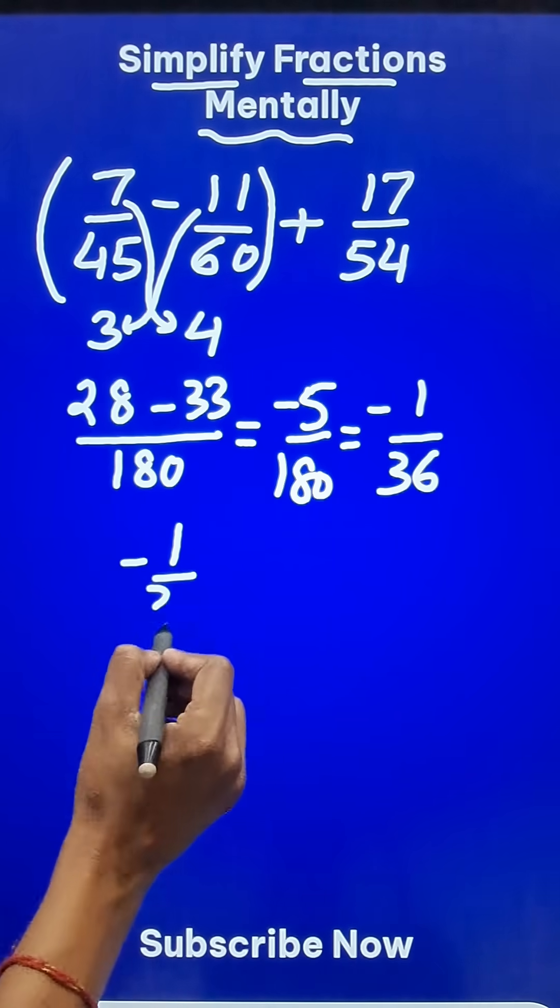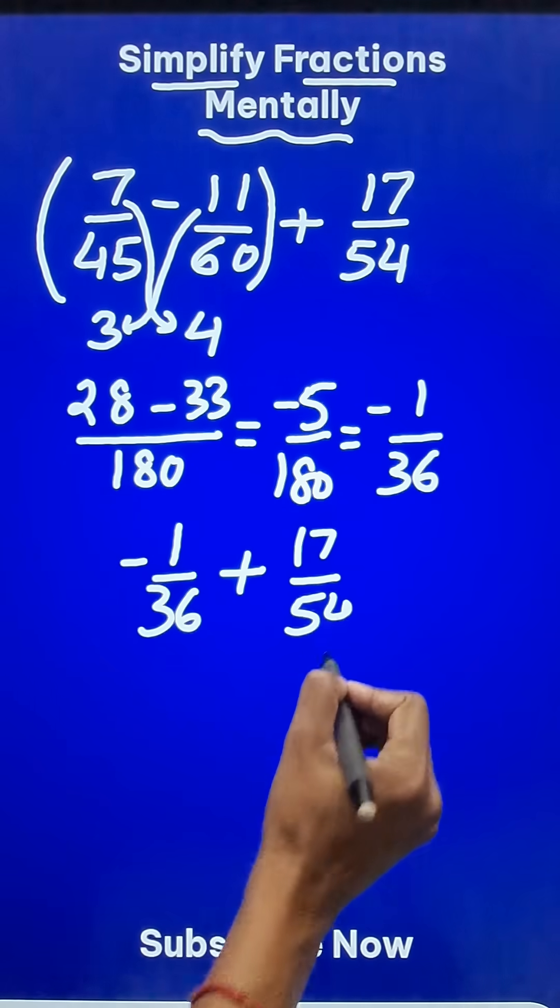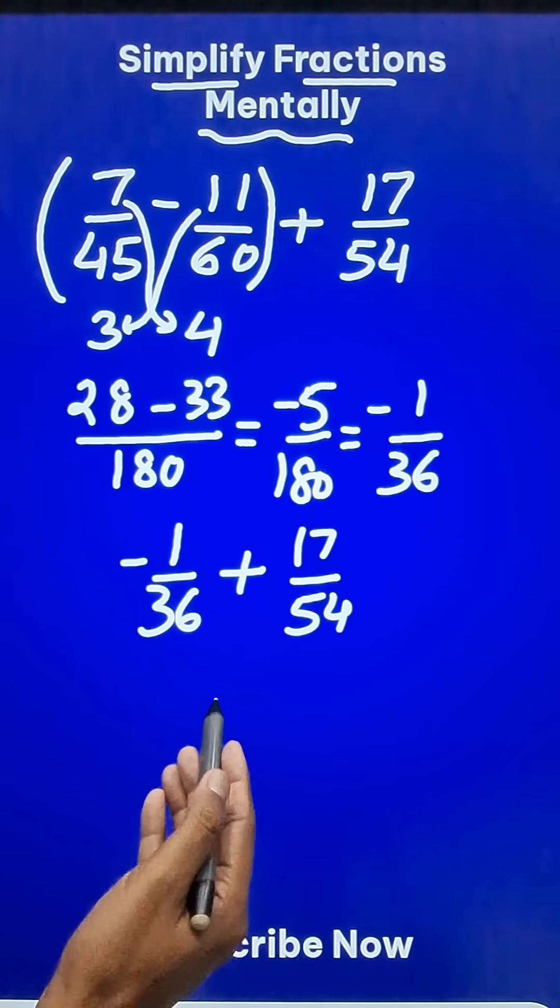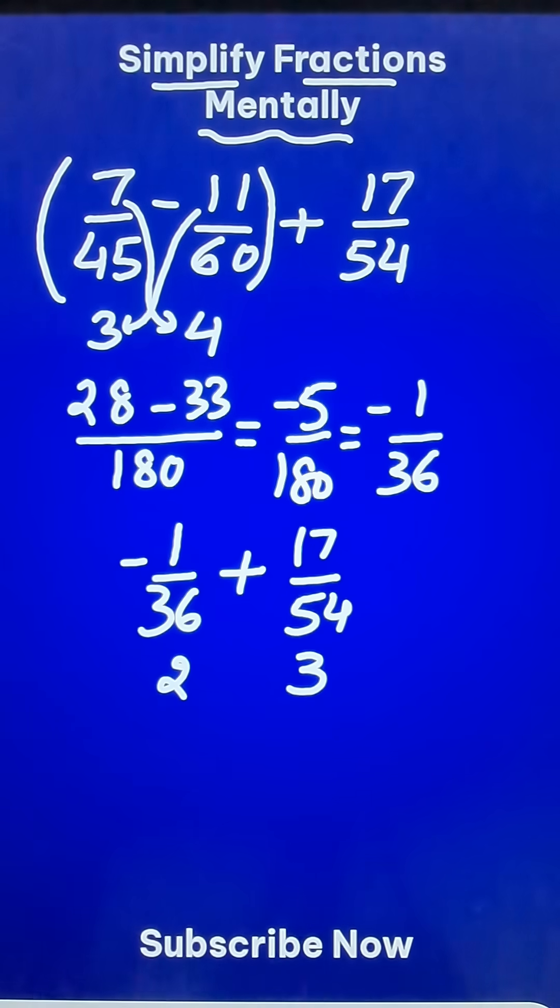Now negative 1 upon 36 is to be combined with plus 17 upon 54. Now 36 and 54 pretty easy. They have a highest common factor of 18.